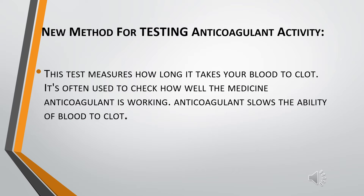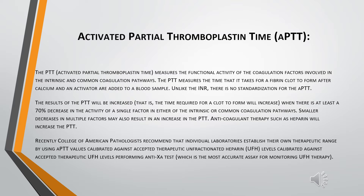An anticoagulant test measures how long it takes your blood to clot. It is basically used to check how well your anticoagulant drug is working and its ability to clot. One of the new methods now being used in laboratories is Activated Partial Thromboplastin Time, also called APTT. APTT is responsible for measuring the functional activity of the coagulation factors involved in the intrinsic and common coagulation pathway, measuring the time taken for fibrin to clot.